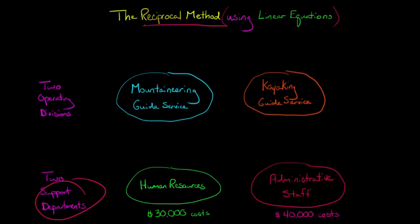I'm going to show you a shortcut using linear equations that allow you to very quickly calculate the amount of cost allocation. Let's say we've got an example firm with two operating divisions. You provide mountaineering guide service and kayaking guide service. This is an adventure company.